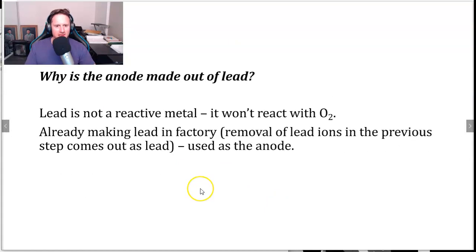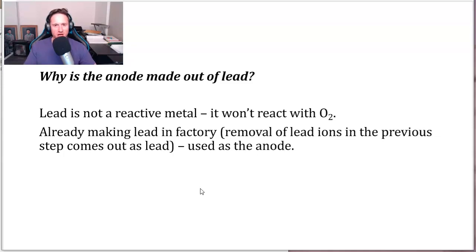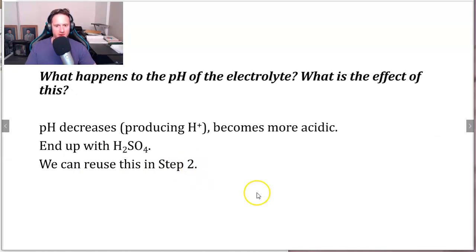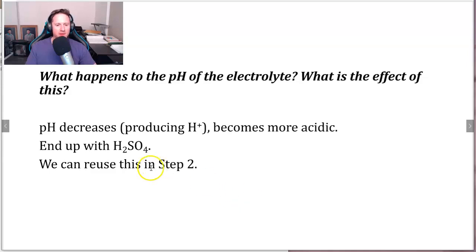Why is the anode made of lead? Lead is not a reactive metal; it won't react with oxygen. Lead is already being made in the factory from the removal of lead ions in the previous step, and that lead is used as the anode. We want inert electrodes — their purpose is to provide a site for oxidation and reduction reactions. Also, what happens to the pH of the electrolyte? The pH decreases because H⁺ is produced in the half-equation at the anode, making it more acidic. We end up with H2SO4, which can be reused in step two.